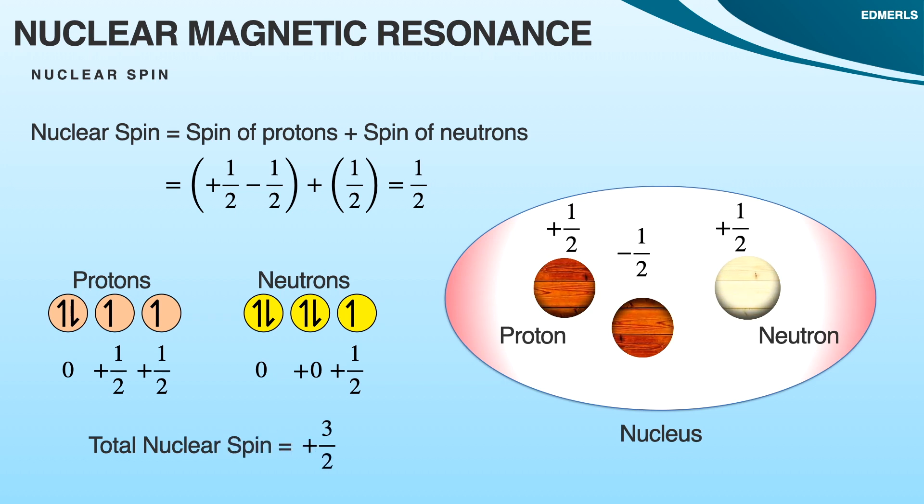We can say that atoms with even numbers of protons and neutrons like two, four, six and more will not have any spin as they will be paired off. This type of atoms are NMR inactive. The rest of the other atoms are NMR active because for NMR the basic requirement is that nuclei should have some spin.